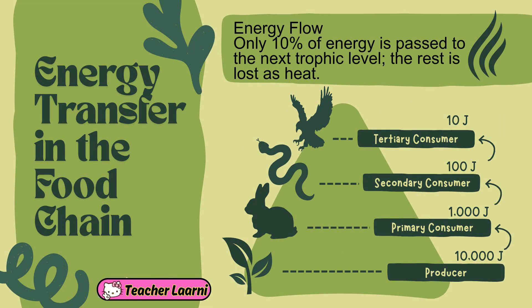Energy flows through different levels of a food chain, gradually decreasing as it moves from one organism to another. Only 10% of energy is passed to the next trophic level. The rest is lost as heat.